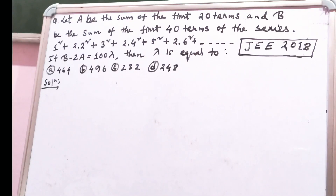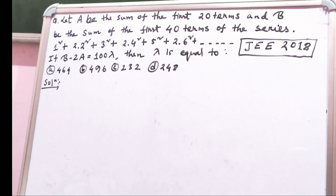This is an IIT JEE 2018 question. Let A be the sum of the first 20 terms and B be the sum of the first 40 terms of the series: 1² + 2·2² + 3² + 2·4² + ...